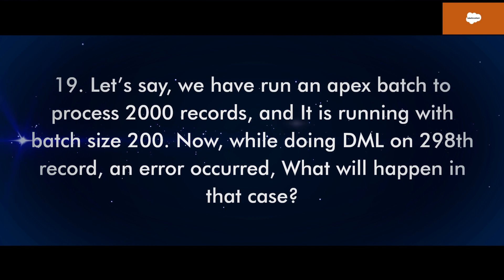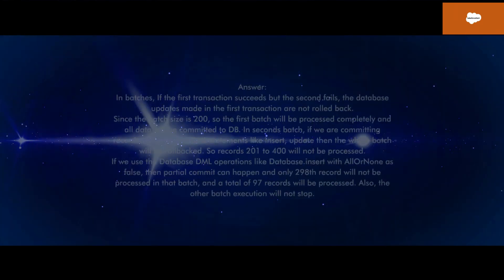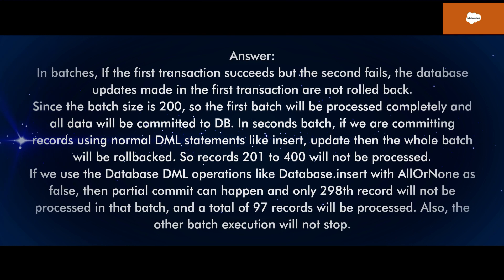Q19: If we run an Apex batch to process 2000 records with batch size 200, and an error occurs while doing DML on the 298th record, what happens? In batches, if the first transaction succeeds but the second fails, the database updates from the first transaction are not rolled back. Since batch size is 200, the first batch will be processed completely and all data committed to the DB. In the second batch, if using normal DML statements like insert or update, the whole batch will be rolled back — so records 201 to 400 will not be processed. If we use Database DML operations like Database.insert with allOrNone as false, partial commit can happen and only the 298th record will not be processed, so 97 records will be processed. Also, other batch executions will not stop.